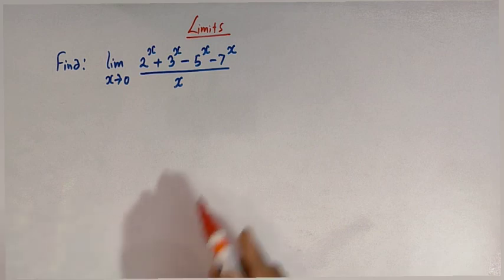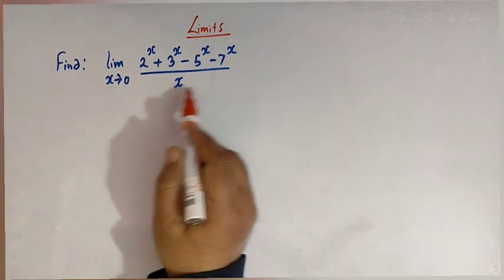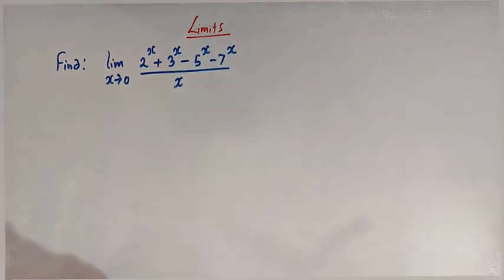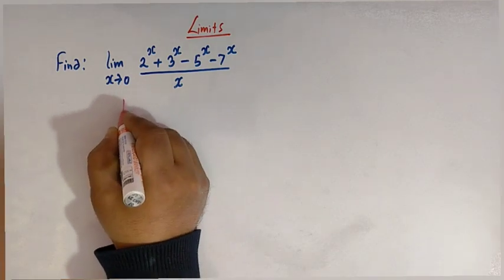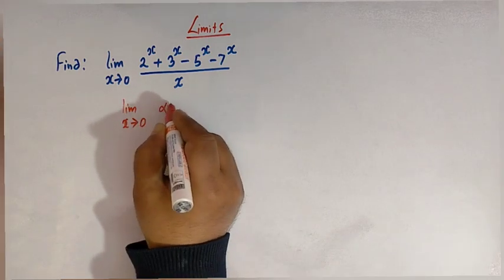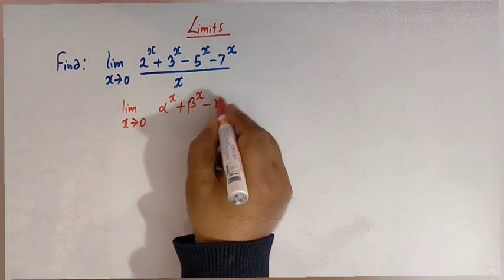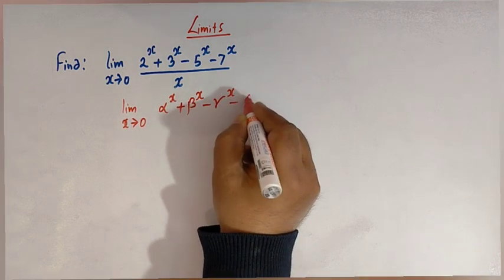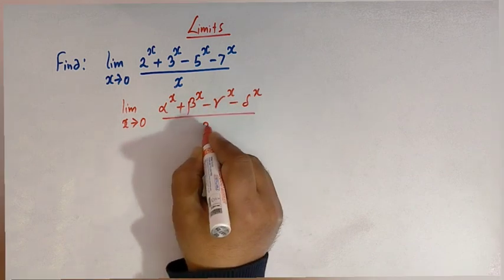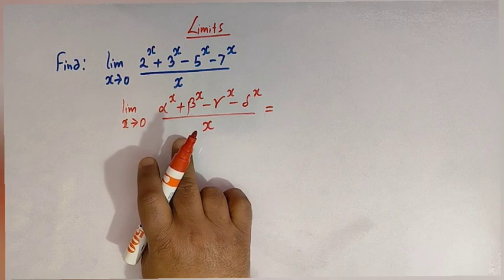So here we'll solve this limit by using a direct result. Let us see how we can find out the value of this limit by using a known result. The result is: if we have a limit x tends to 0 and we have alpha raised to x plus beta raised to x minus gamma raised to x minus delta raised to x divided by x, then what is the value of this type of limit?